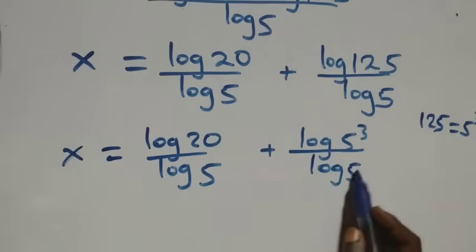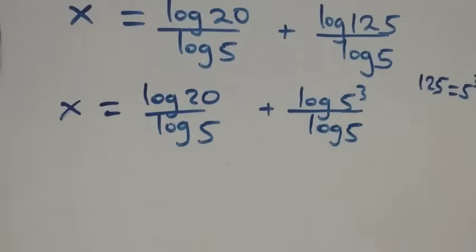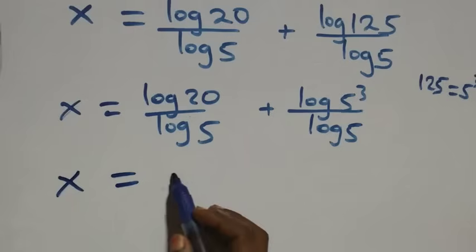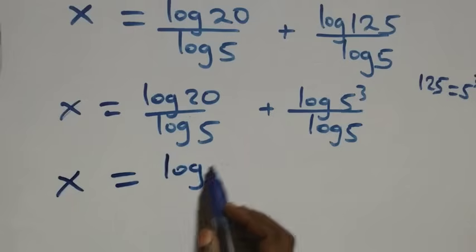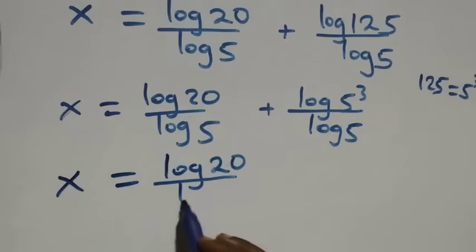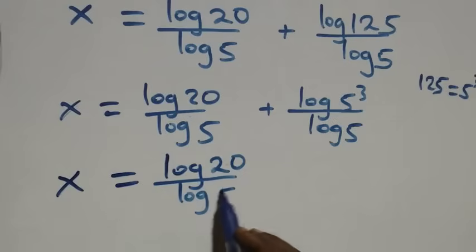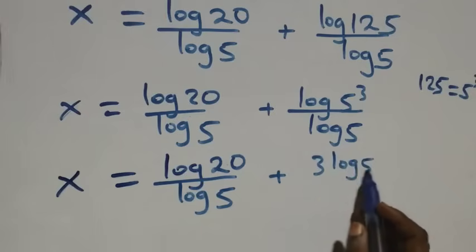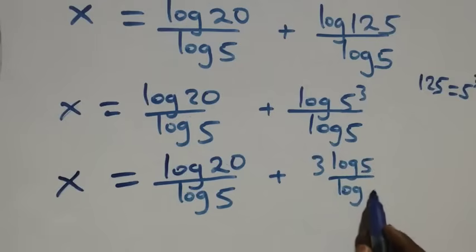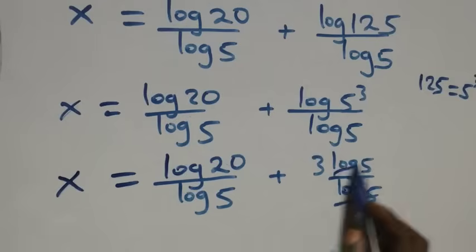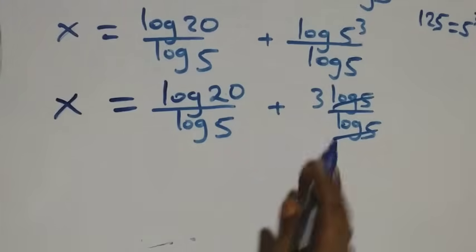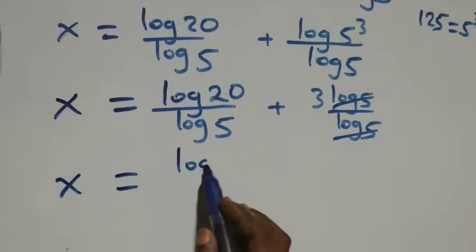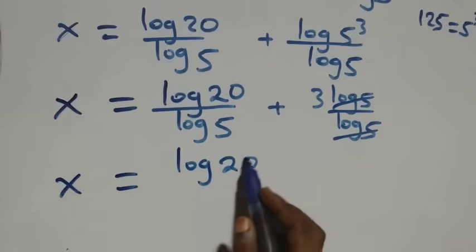We apply the power rule of logarithms: three comes down, and we have x equals to log twenty over log five, plus three log five over log five. Log five cancels with log five, and we have three left, so x equals to log twenty over log five plus three.